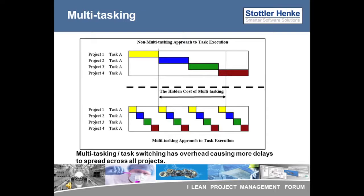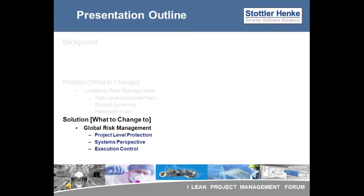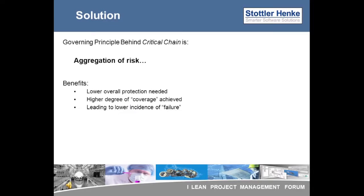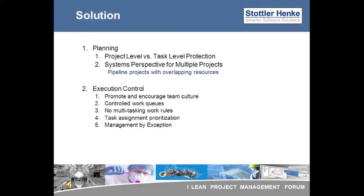Now we move on to the solution. We have seen that localized risk management causes many problems. Fortunately, the principle of aggregation of risk can help solve many of these same problems. Aggregation of risk is the governing principle behind critical chain. Benefits of aggregating risk include a lower amount of protection being needed, while a higher degree of protection can be achieved, which results in improved project performance. Aggregating risk is a more general approach to risk management. During project planning, the goal is to protect the project at the project level, and not necessarily at the task level. These concepts can be extended to multi-project implementations, which will result in maximizing throughput.